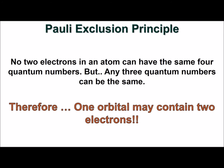The spin quantum number leads to the Pauli Exclusion Principle, which states that no two electrons in an atom can have the same four quantum numbers, but any three quantum numbers can be the same. This also implies that each orbital may contain two electrons.